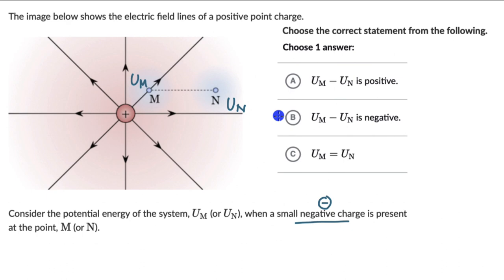We can then ask: when these two charges come closer to each other, what does that do to the potential energy of the system? We can draw a parallel: think about a ball dropped from a height that goes rushing towards the earth due to gravity. In that case the potential energy decreases. Similarly, there is an attractive force between the negative and positive charge, so when the negative charge moves towards the positive charge, the potential energy of the system decreases.